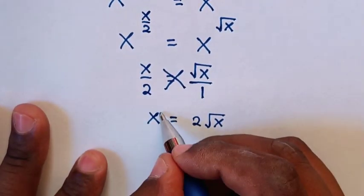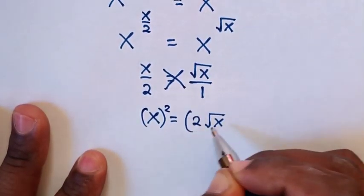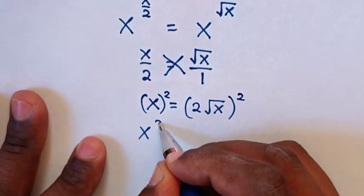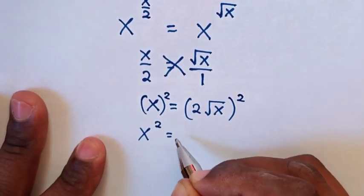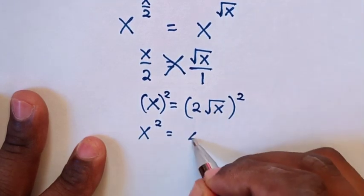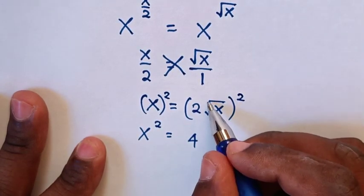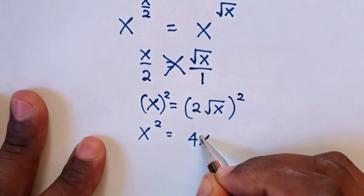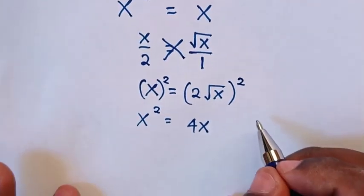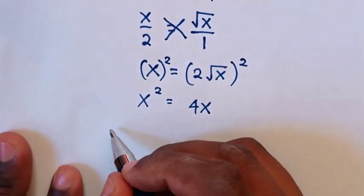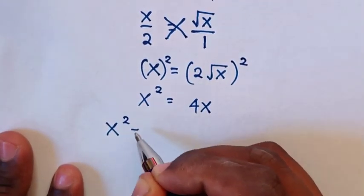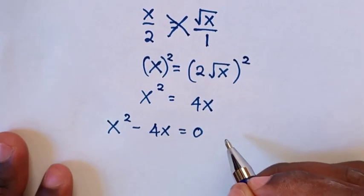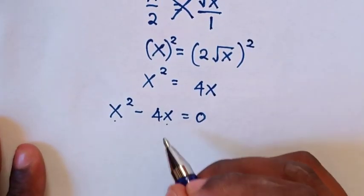Then in the next step we square both sides. So here it will be x squared is equal to 2 squared, which is 4, times square root of x squared. The square root cancels with the square, so it will be 4x. Then we take this 4x to the left side.